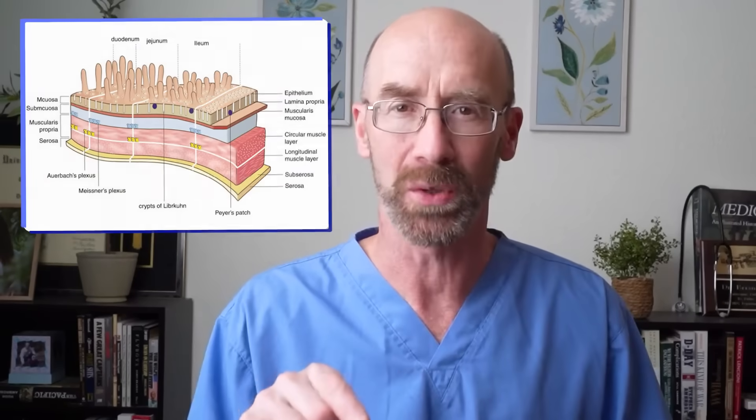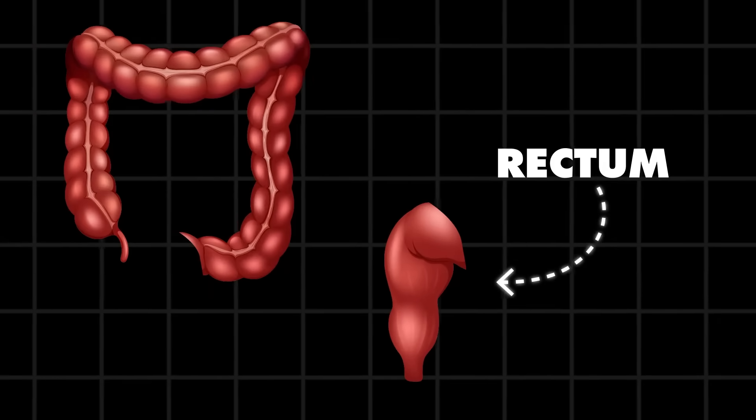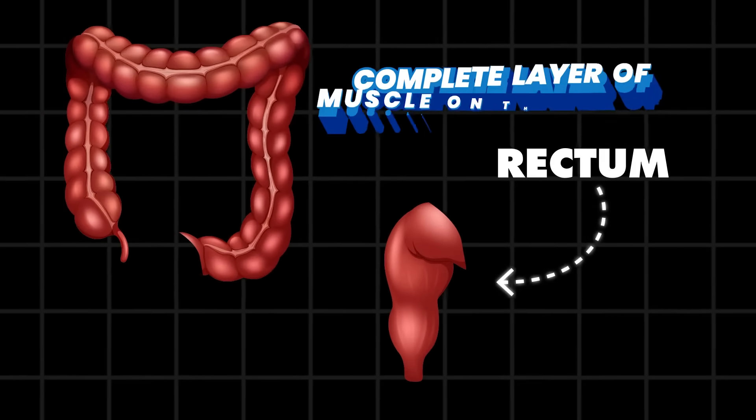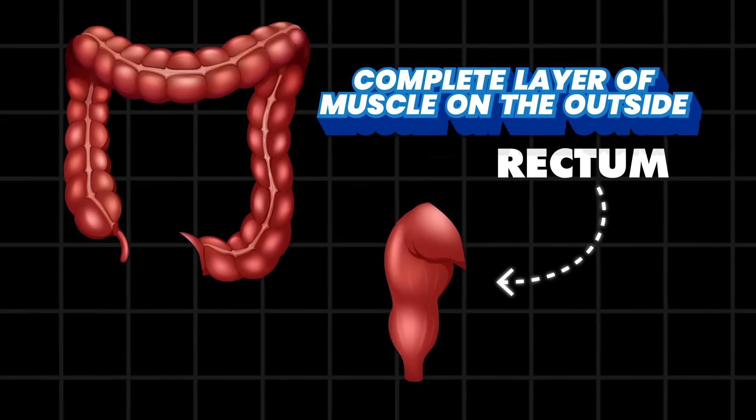The small and large intestines are built differently. The small bowel has an inner lining known as the mucosa and a layer of muscle that surrounds the outside like a giant tube. The rectum, the very end of the colon, is similar — it has a complete layer of muscle on the outside. But in between the small bowel and the rectum is the colon, and it's completely different. The muscle there isn't a tube; instead it's compressed into three thin ribbons arranged around the outside of the colon, called taeniae coli.